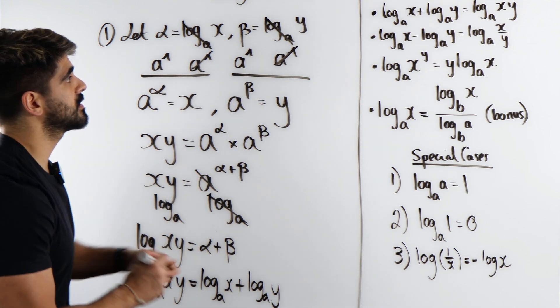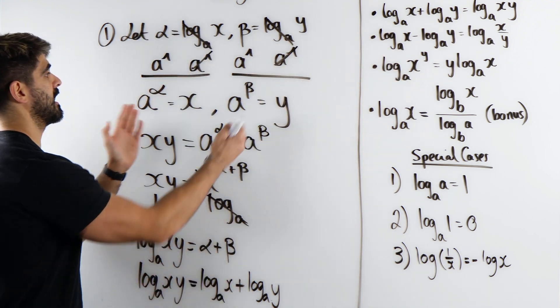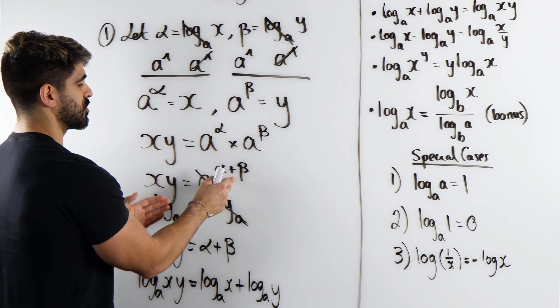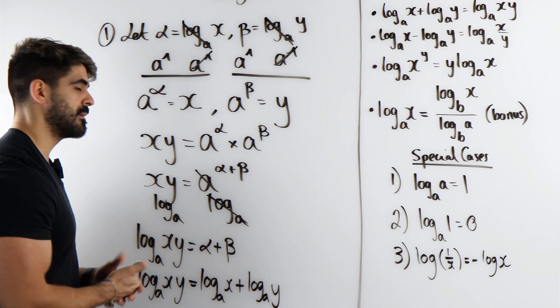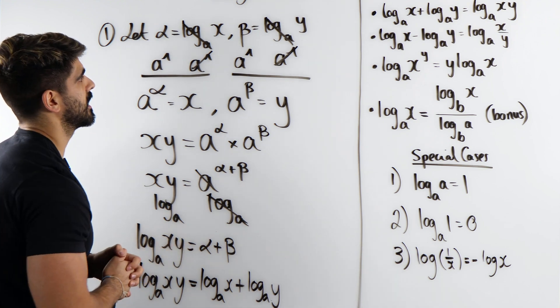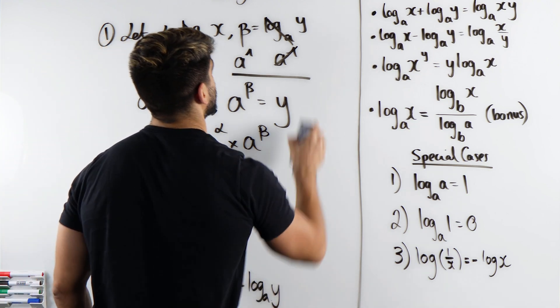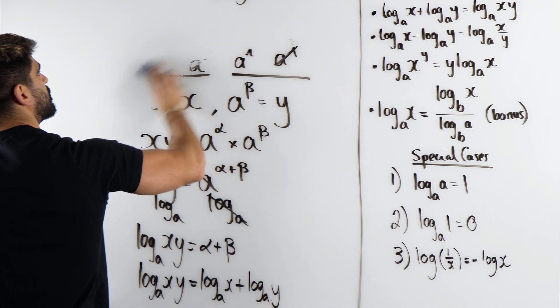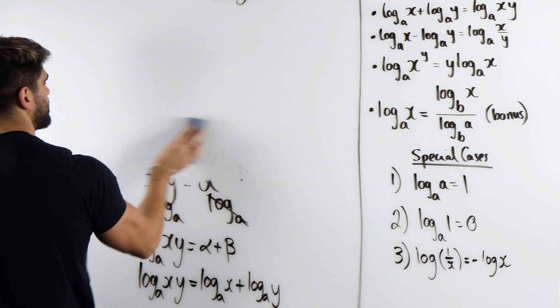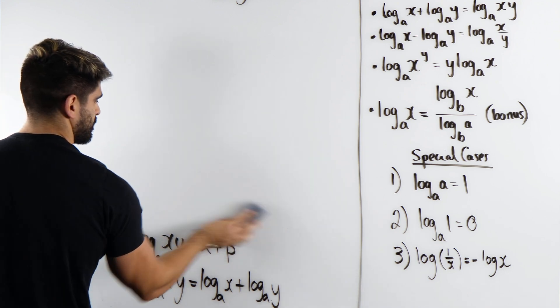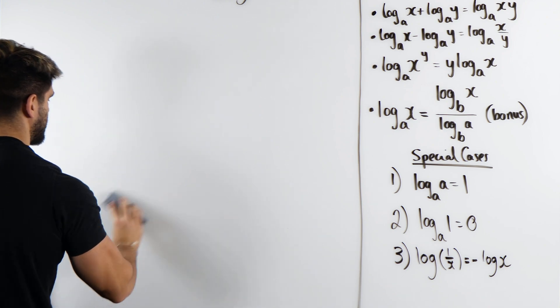Now, for this proof here, you're literally just going to do the exact same thing. But here, you're just going to divide them. This will just say minus. So the proof is literally the same. You'll have X over Y. But I recommend you guys do it as an exercise. Mathematicians do this a lot. They say we'll leave this as an exercise to the reader.